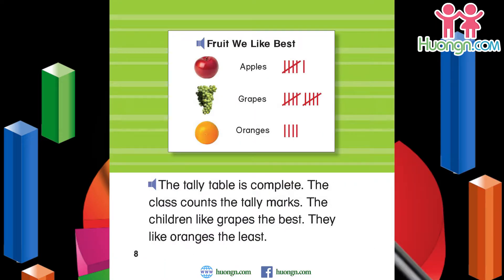The tally table is complete. The class counts the tally marks. The children like grapes the best. They like oranges the least. Fruit we like best — Apples: six. Grapes: ten. Oranges: four.